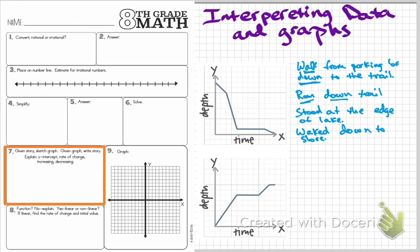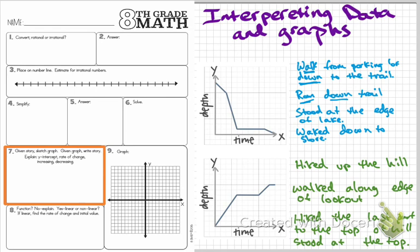For the second graph, notice it's going the other direction, so our story should represent something that works with that situation. I'll say: I hiked up the hill, then I walked along the edge of the lookout — notice the depth or height is staying the same, but I'm still moving. Then I hiked the last part up to the top of the hill and stood at the top. We use those clue words to tell us whether we're walking, running, or standing. That gives you a sense of how to both interpret graphs and create graphs from stories, as well as the key pieces of information that are part of our graphs.